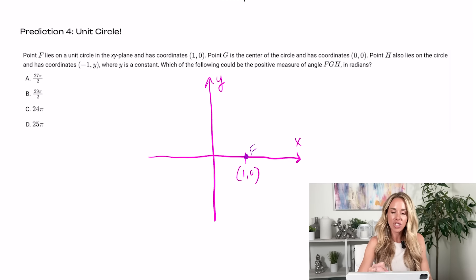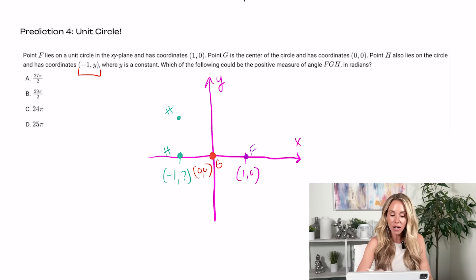Then we have point G is at the center. So here's G. And then they have point H also lies on the circle and it has the coordinates negative 1Y. So that means, if we're at negative 1, we don't know the Y, we're going to be maybe where Y is positive up here. That could be H. H could be here, right on the x-axis, if Y is 0. Or H could be down here if Y is negative. But it's going to be somewhere in the second or third quadrant.